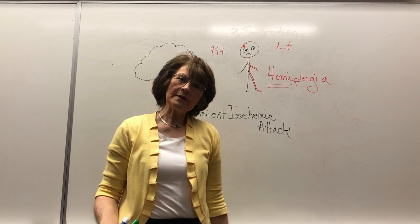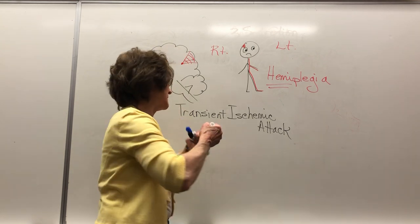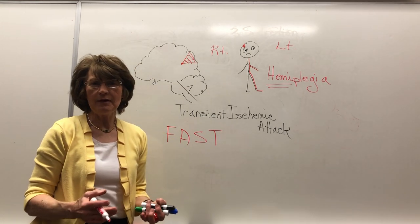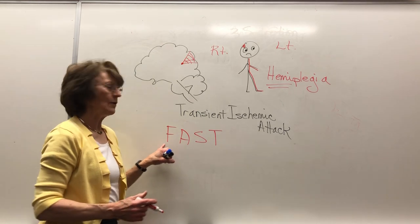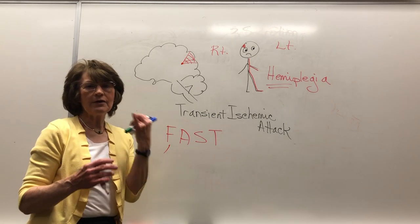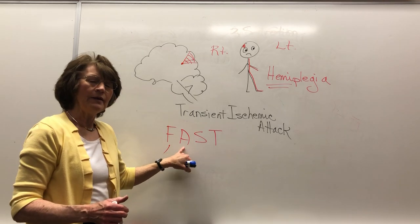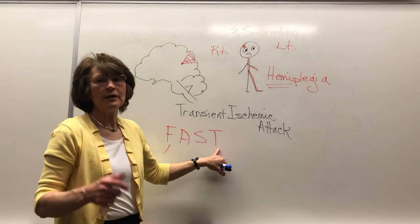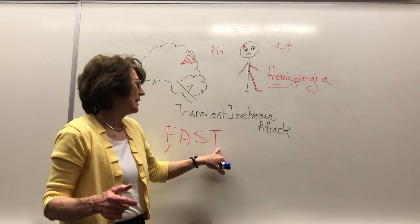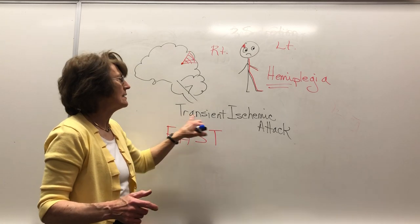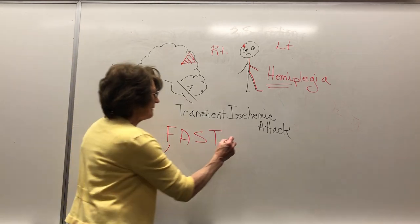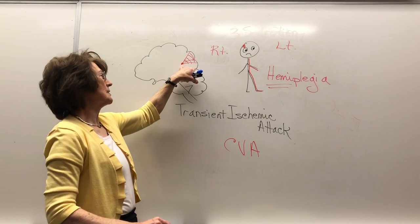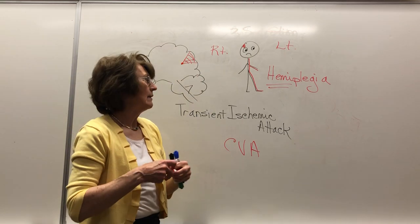There's the FAST mnemonic for stroke. People should always be familiar with this. F is for face — can they smile, or is one side not working? A is for arm — can they lift that arm? S is for speech — is it slurred or can't they make complete sentences? T is for time — the sooner they can be diagnosed and get TPA, the better. CVA stands for cerebrovascular accident: here's the cerebrum, here's the vascular, and it's blocked off.